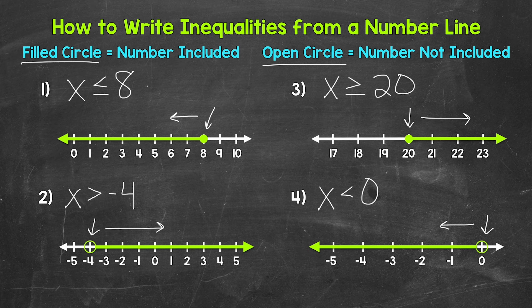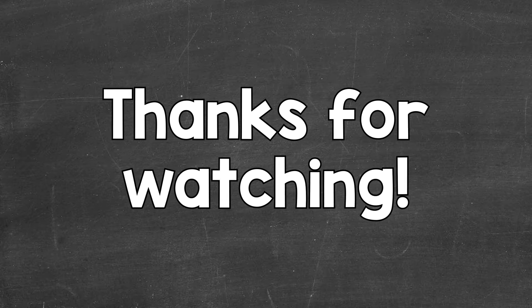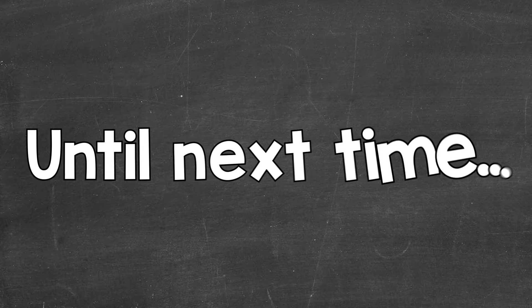So there you have it — there's how to write inequalities from a number line. Check to see if you have a filled circle or an open circle, and then check to see which direction the arrow is going. Is the arrow pointing to all of the numbers greater than whatever number you're looking at, or pointing towards all of the numbers less than whatever number you are looking at? Then you can write an inequality based on that. There's an introduction to inequalities on a number line — I hope that helped. Thanks so much for watching. Until next time.